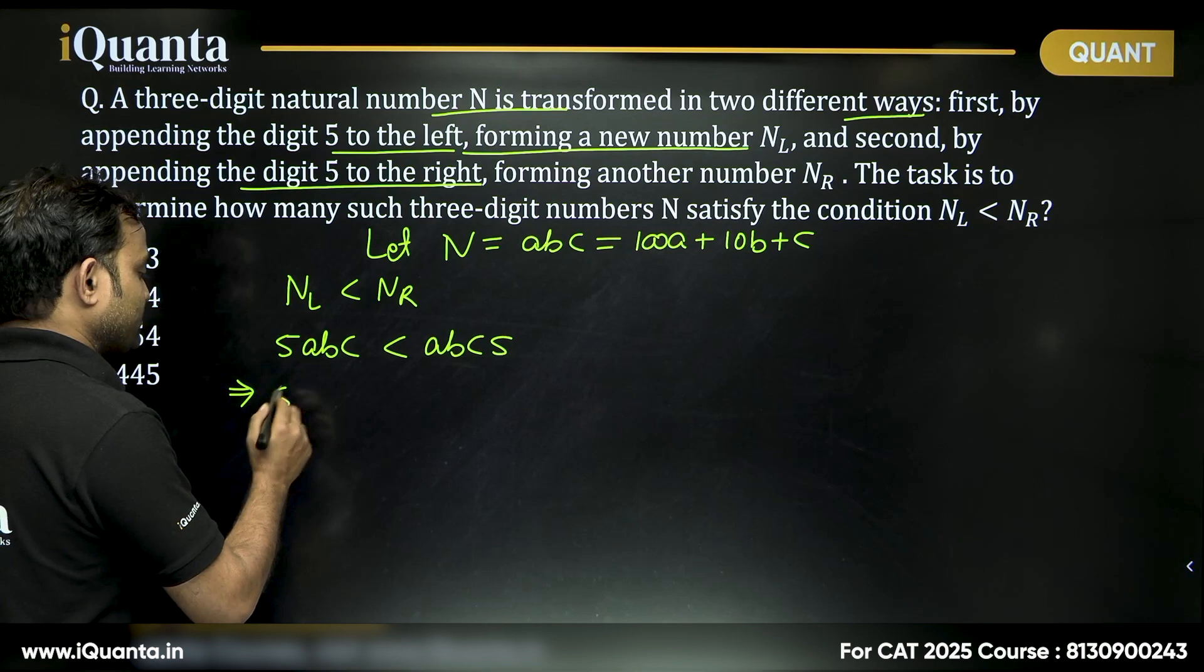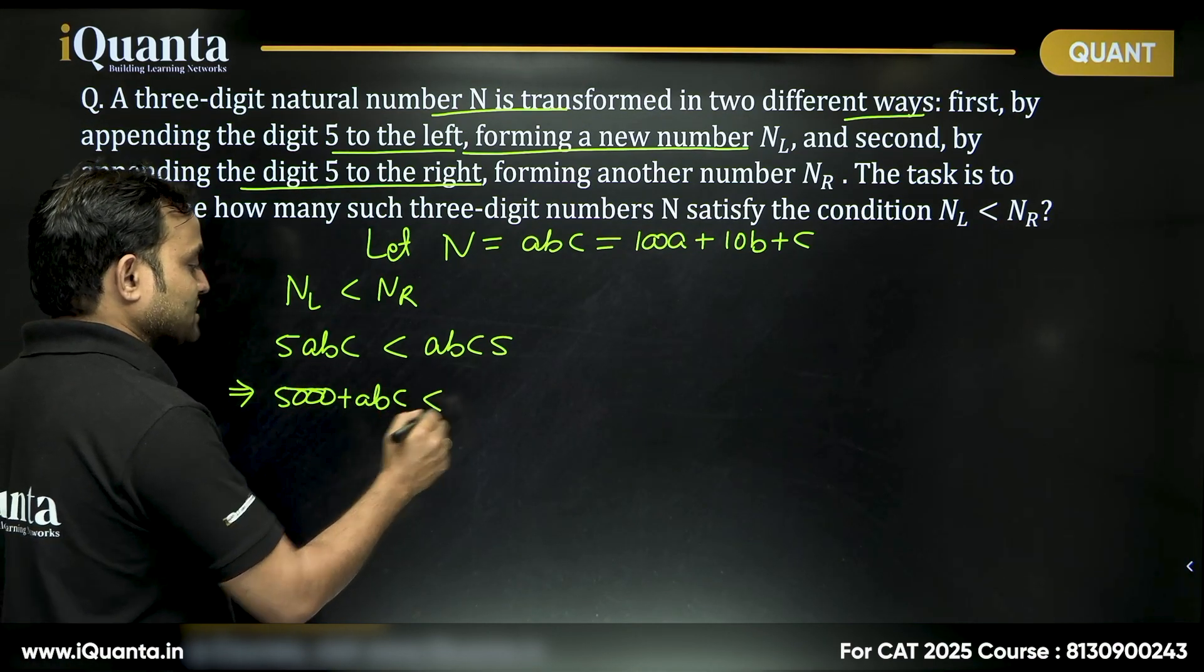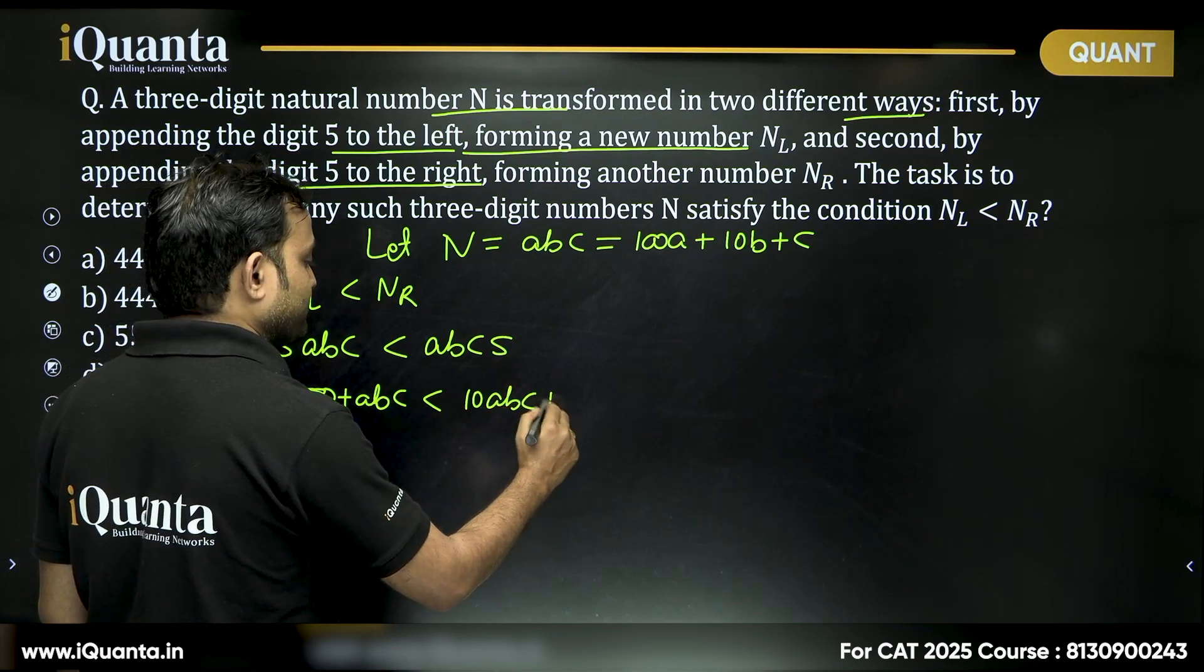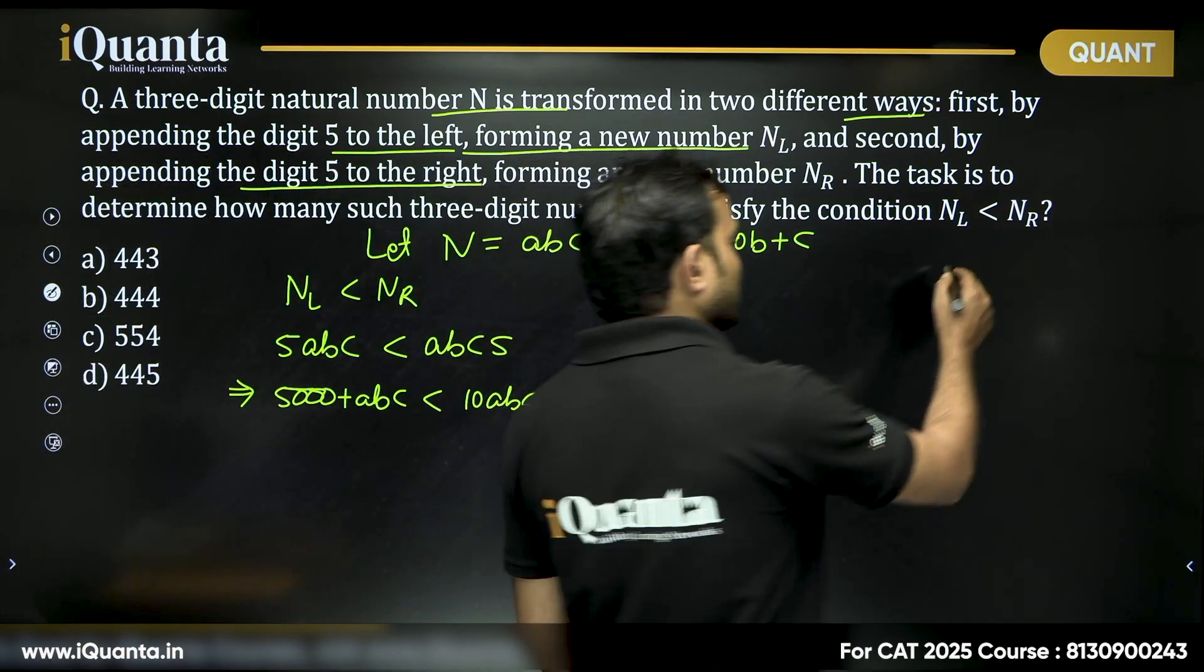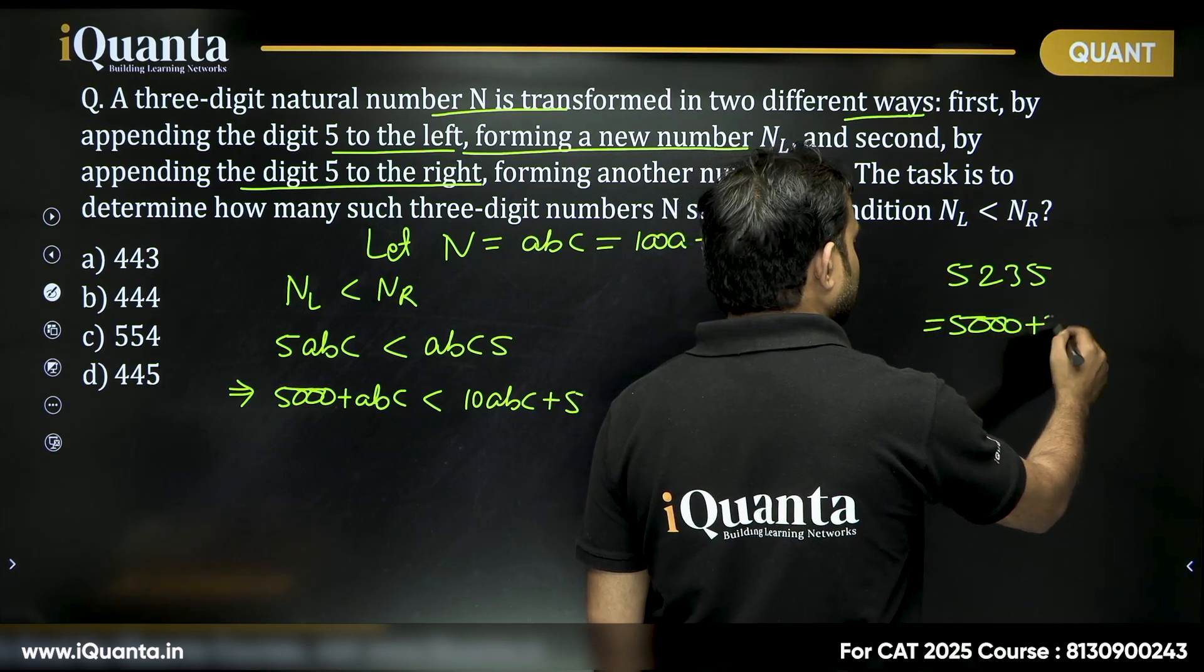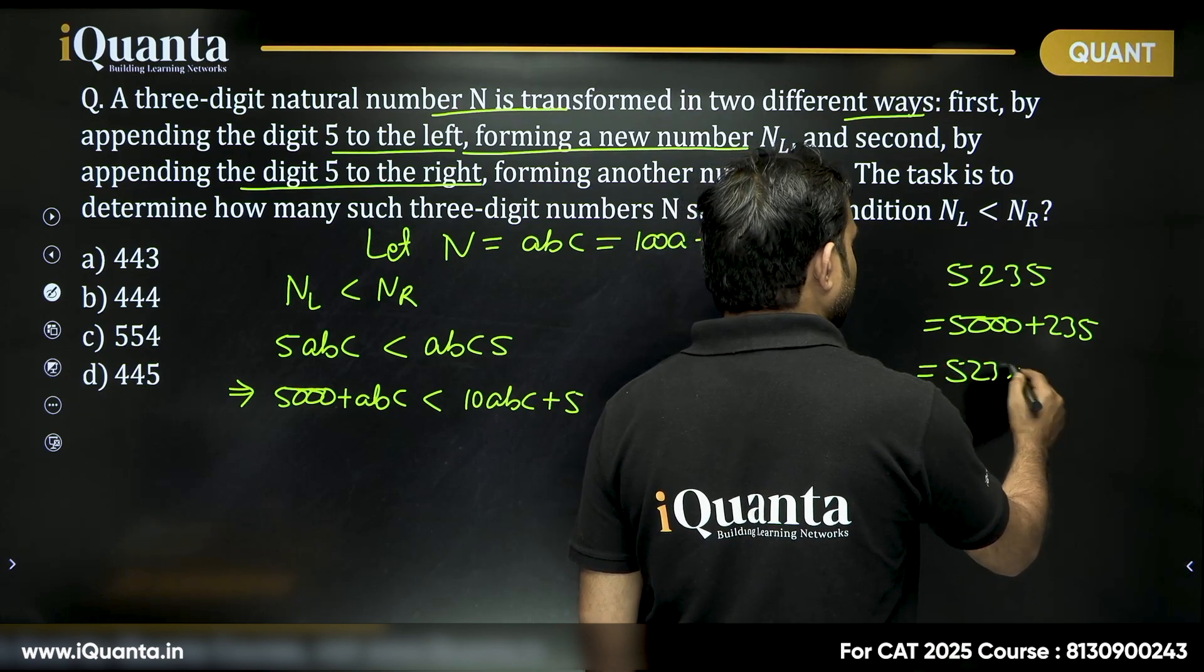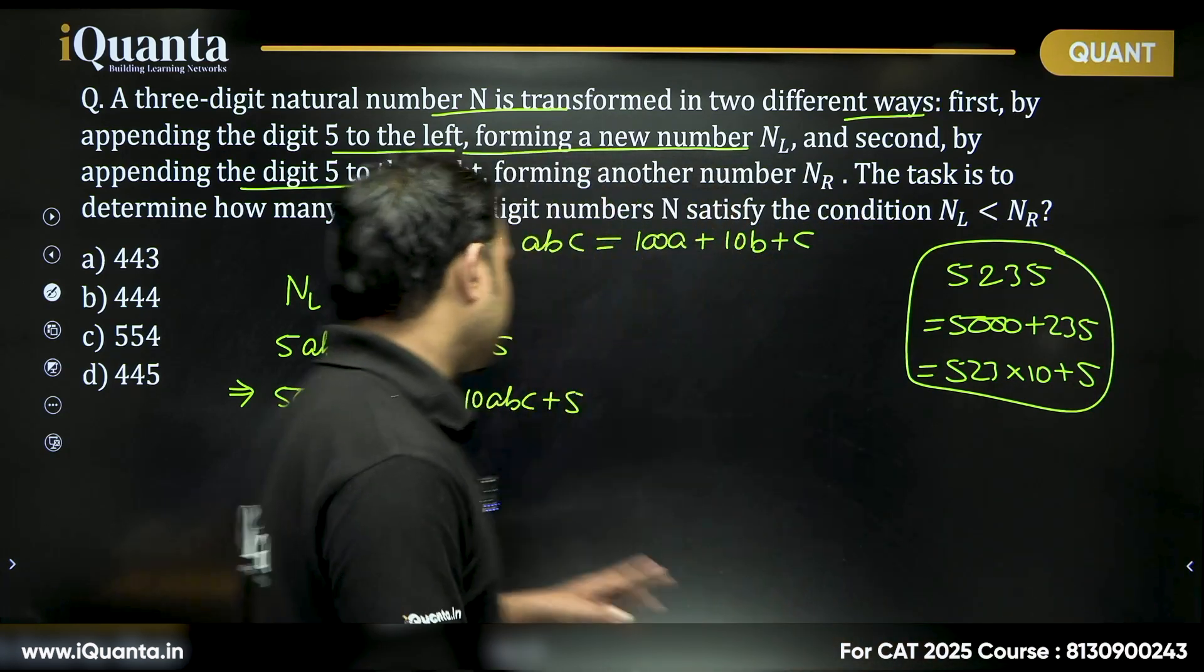Now, can I say this can be written as 5000 plus abc and this can be written as 10 times abc plus 5. How is that happening? For one example, let us say 5235. Can I write it as 5000 plus 235 as well as I can write it as 523 into 10 plus 5. So, one example to understand both the scenarios.